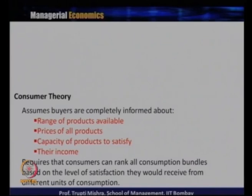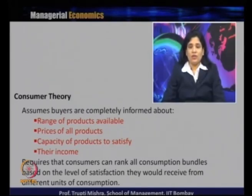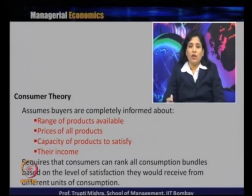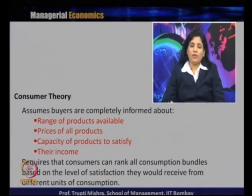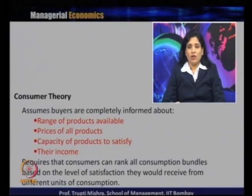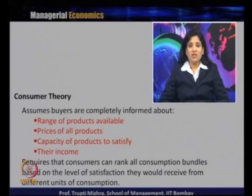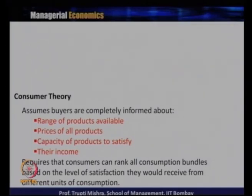This requires that consumers can rank all consumption bundles based on the level of satisfaction they would receive from different units of consumption. If there are 10 products available and income allows spending on only two or three, the rational consumer first ranks products by priority and usefulness, then decides how much to buy of each. All information — range of products, prices, capacity to satisfy, and income — helps them rank consumption bundles.